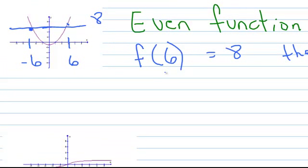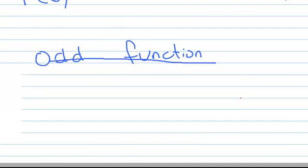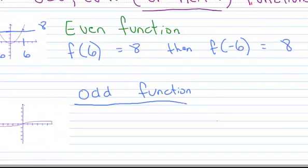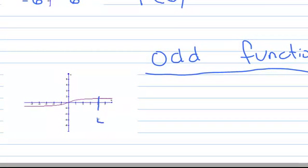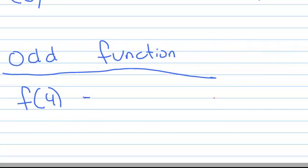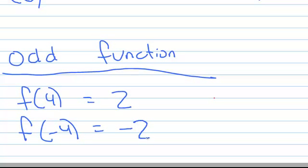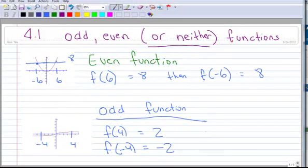So that's also a definition of an even function. To be an odd function, it does something kind of similar but kind of different. Let's pretend that's 4, and that's negative 4. Okay, so to be an odd function, if I put in 4 and I get out 2, then if I put in the opposite of 4, which is negative 4, I should get out the opposite of my output, which is negative 2. Let's see if that works. I put in 4, and I get out 2. Good. I put in negative 4, and I get out negative 2. So there's another way that you can tell that's an odd function.